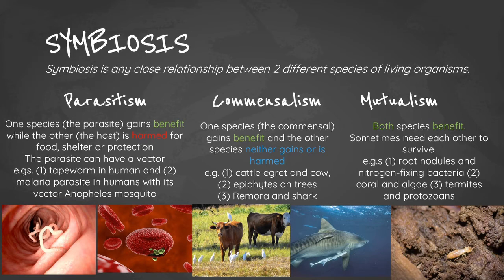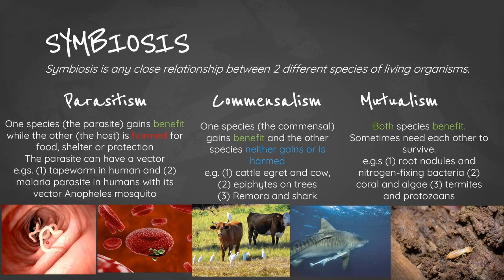Symbiosis is any close relationship between two different species of living organisms. The first symbiotic relationship is parasitism: one species, the parasite, gains benefit while the other, the host, is harmed — whether for food, shelter, or protection. Some parasites have an associated vector. For example, the tapeworm lives in human intestines and absorbs digested food; the infected person suffers loss of appetite, abdominal pains, weight loss, and nausea. The intermediate host is usually the pig.